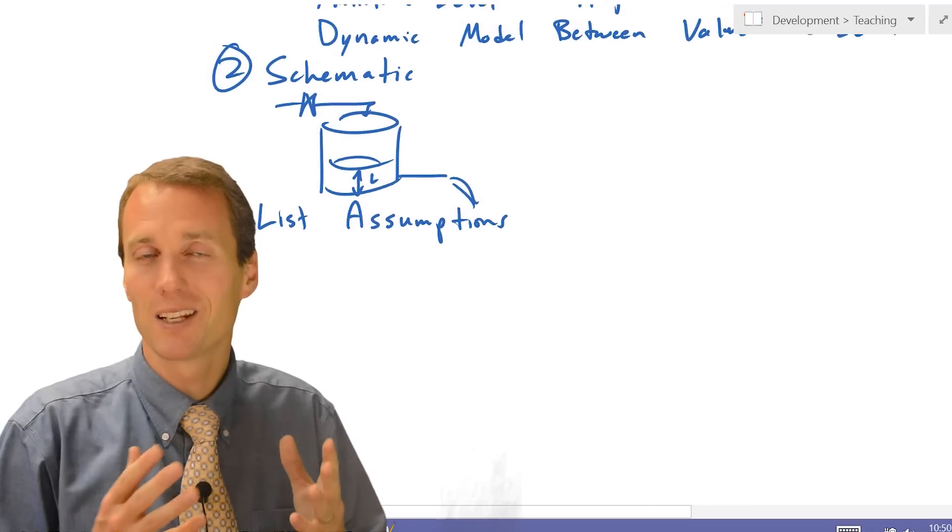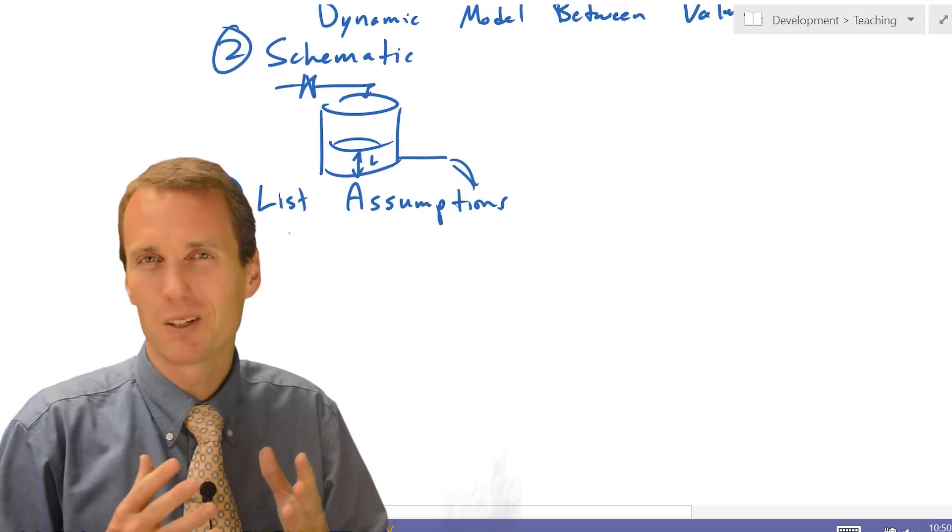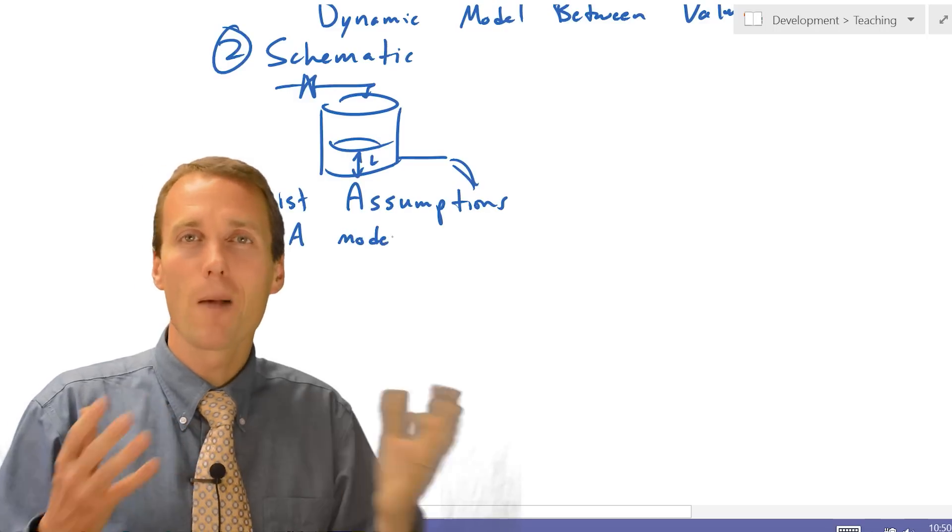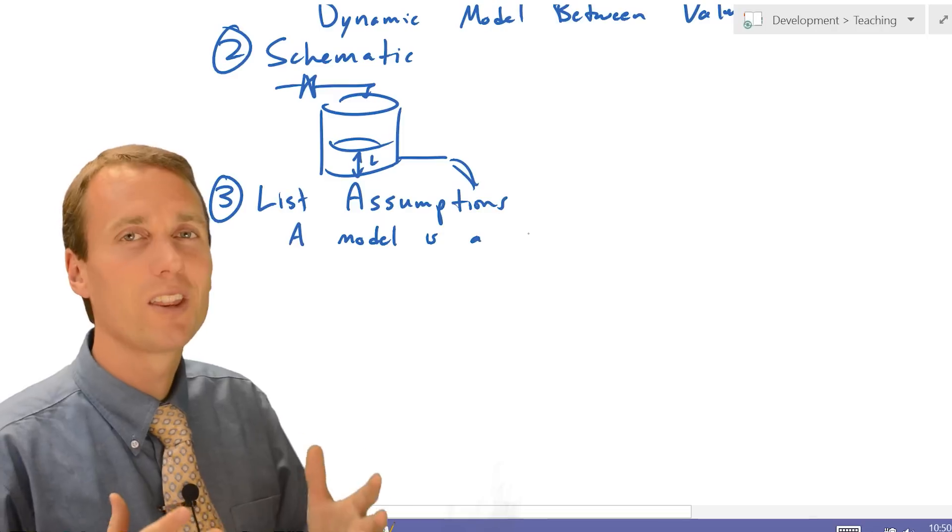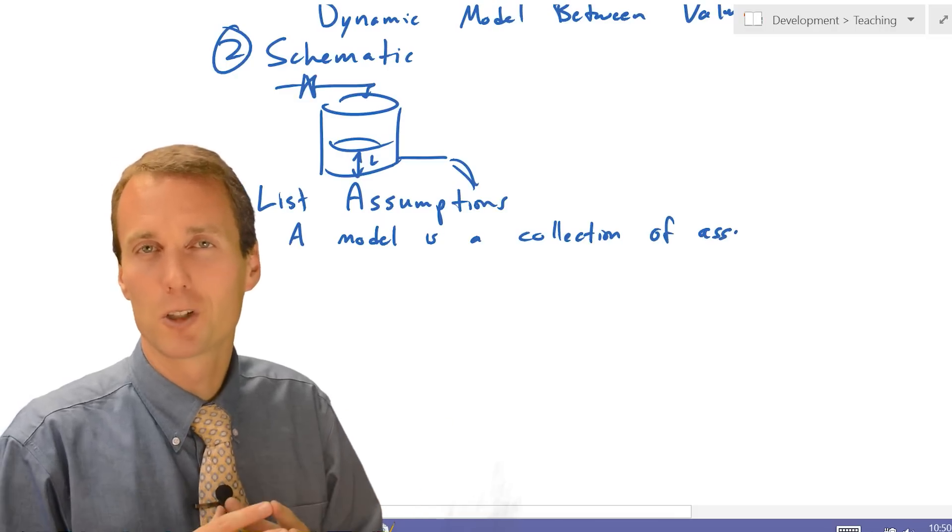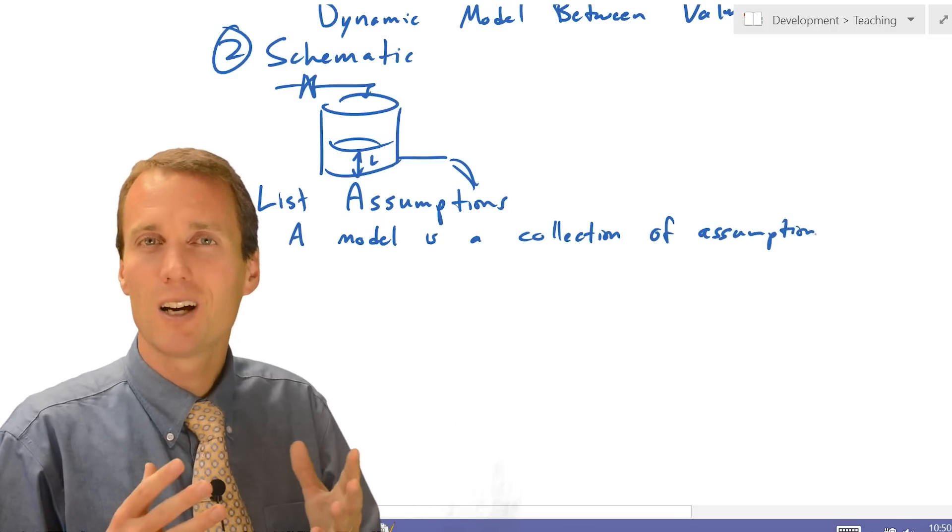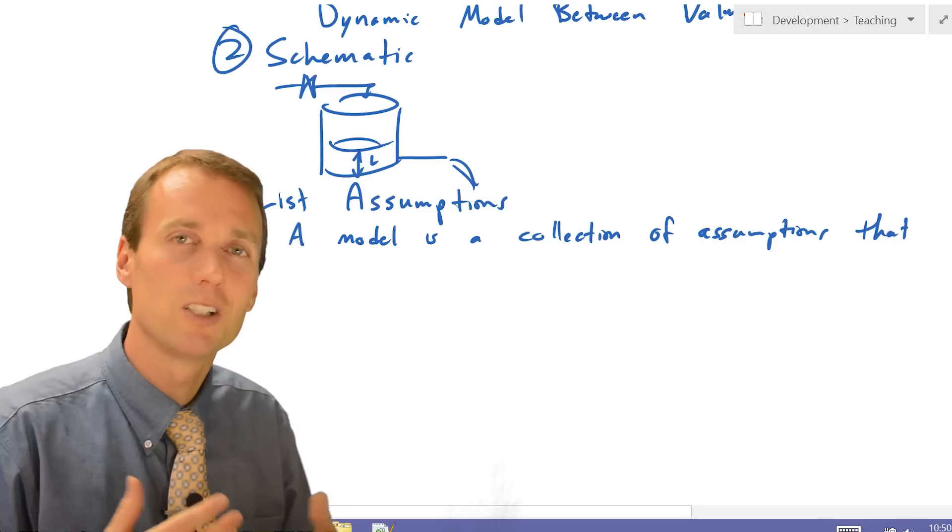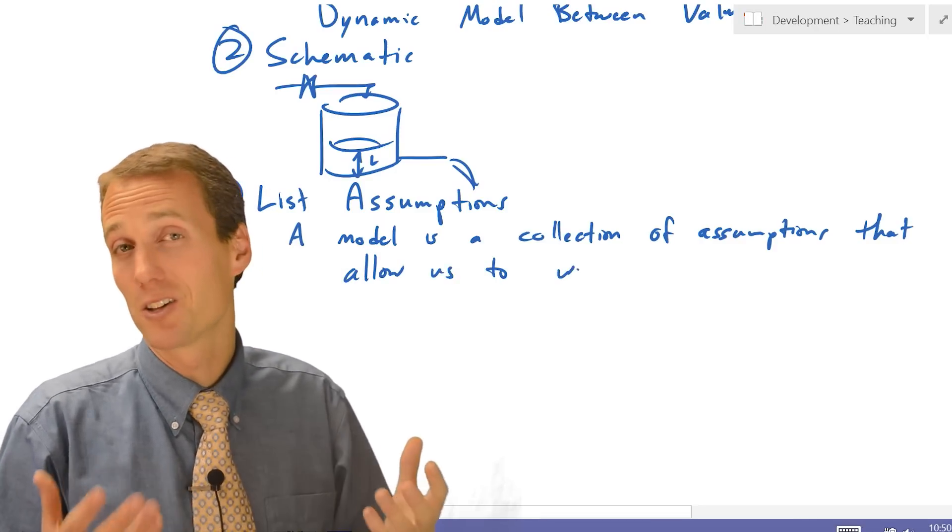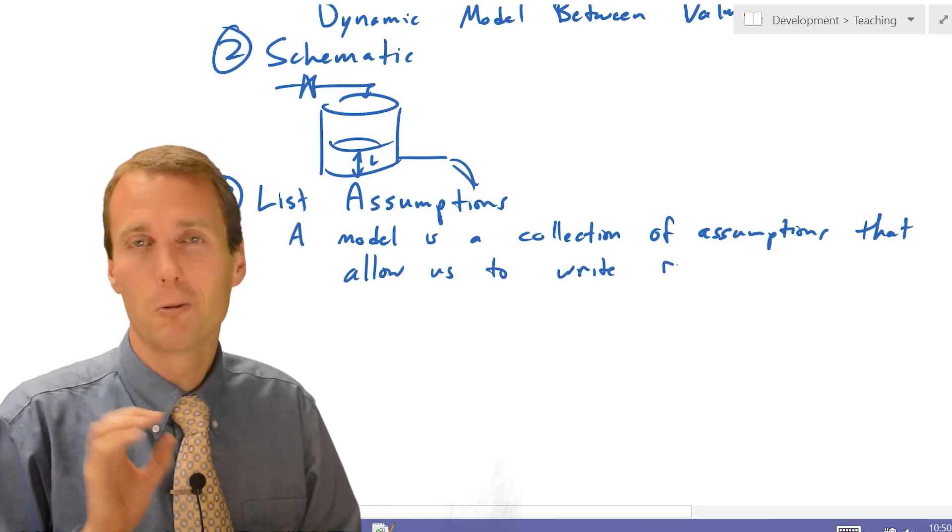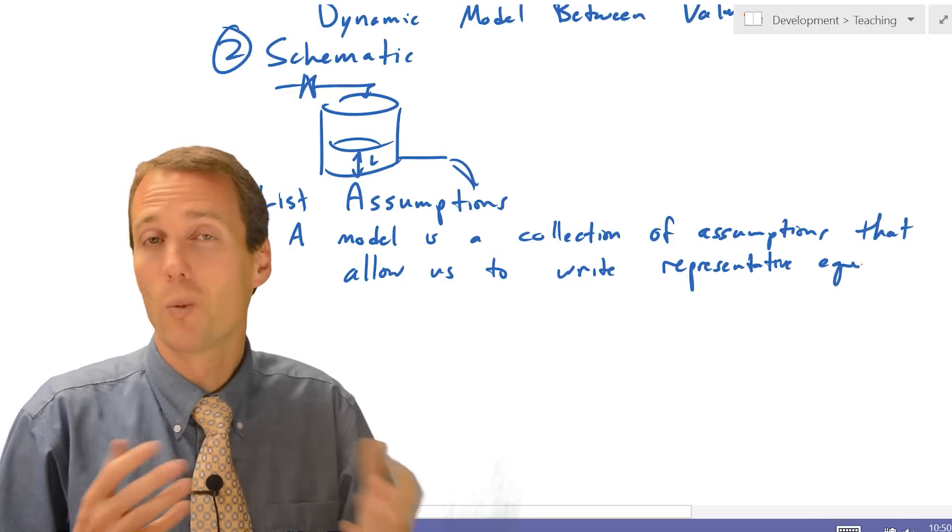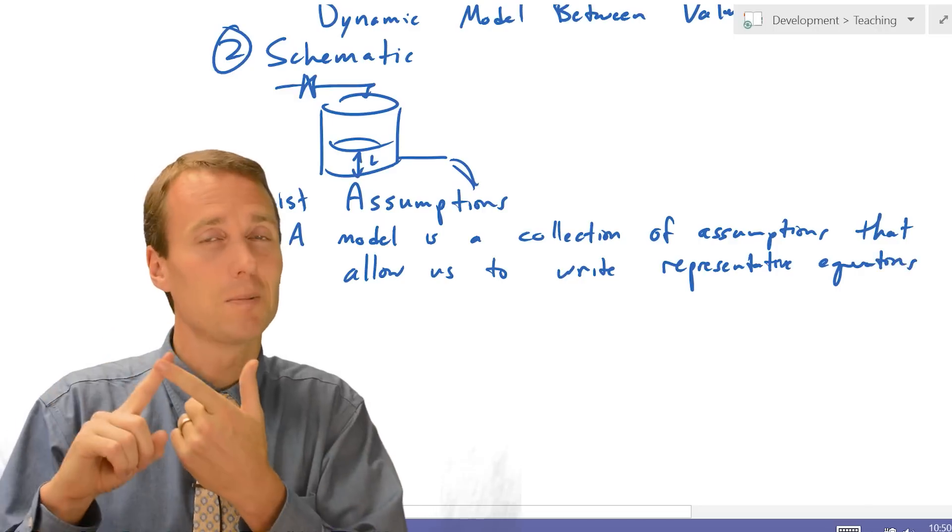So as we think about the different assumptions, you might think, well, why is that so important? But really, when I've developed mathematical models, one thing that keeps coming back is that really a model, a mathematical model, especially from first principles, it's really not a collection of equations. It's really just a collection of assumptions, simplifying assumptions that allow us to write those equations. So we really want to pay close attention to this step. So a couple that come to mind: